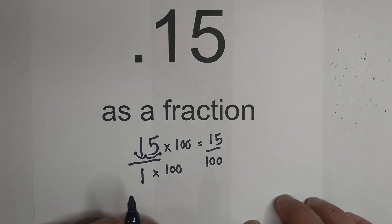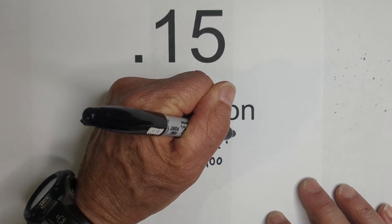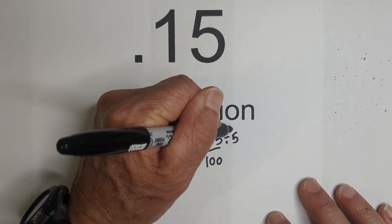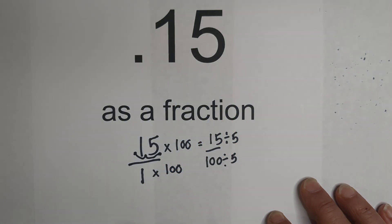Now we can reduce the fraction. The greatest common factor is 15. Okay, so, excuse me, 5, not 15. So I'll divide numerator and denominator by 5.